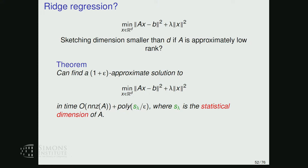Here is a theorem (from the same paper by Avron, Guyenne, and Woodruff): for the regularized least squares problem, we can find a 1+ε approximate solution in time nnz(A) plus poly(S_λ · d), where S_λ is the statistical dimension of A relative to regularization λ, defined as trace((A+λI)⁻¹A) = Σⱼ λⱼ/(λⱼ+λ), where λⱼ are the eigenvalues of AᵀA.